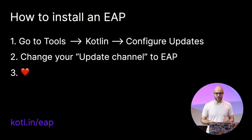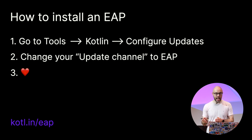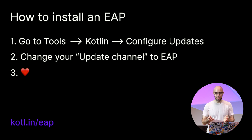It is very easy to install EAP versions. In your IDE, just go to Tools > Kotlin > Configure Kotlin Plugin Updates and select the proper update channel type. From now on, all of your new features will use Kotlin EAP versions. If you want to use EAPs in an existing project, you should also modify your Gradle files. We have described the algorithm on a special page — feel free to check it out, it's available in the description of the video.